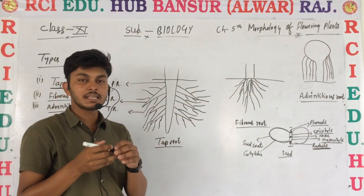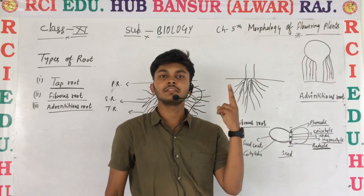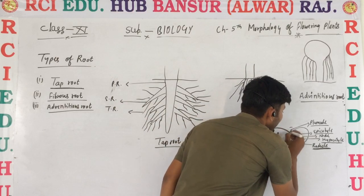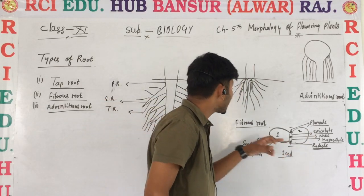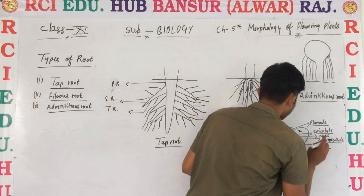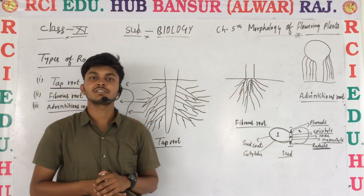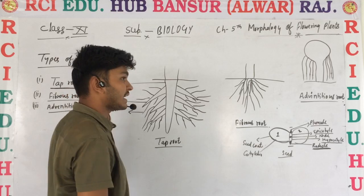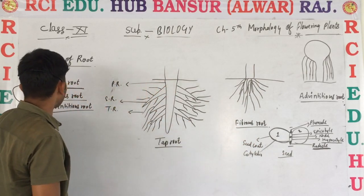The examples of tap root include all dicot seeds — seeds that have two cotyledons, as visible in the diagram. Seeds having two cotyledons, the roots forming from them are known as tap roots, and these roots are formed by the radical. Examples include chana (chickpea), sarso (mustard), and all well-developed, large dicot plants — these are also examples of tap root.